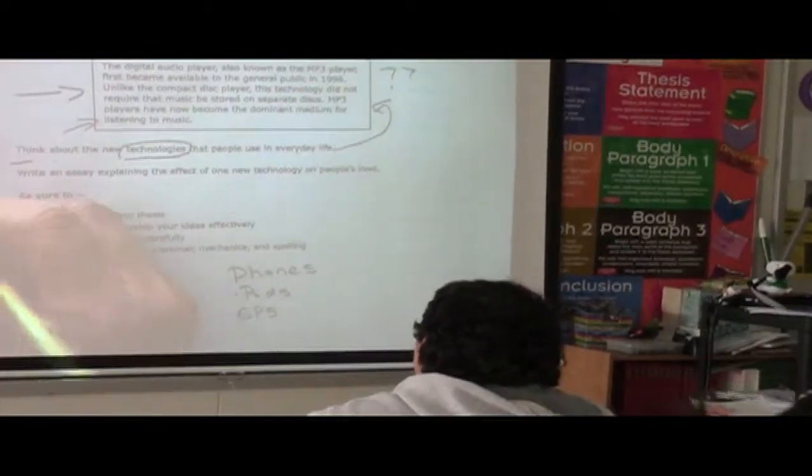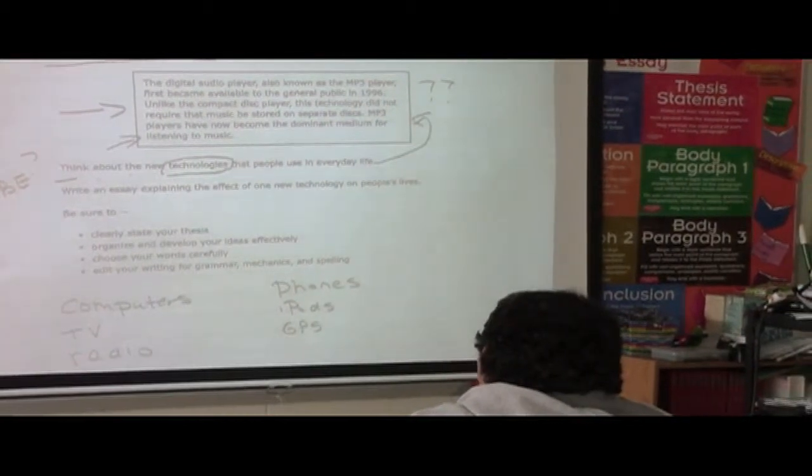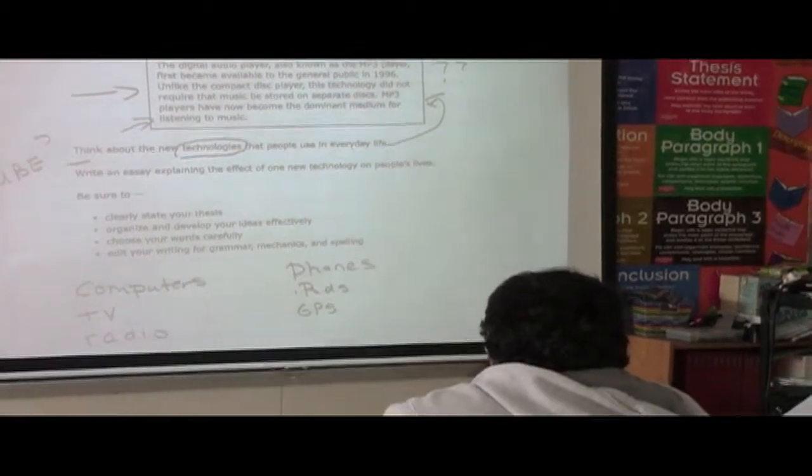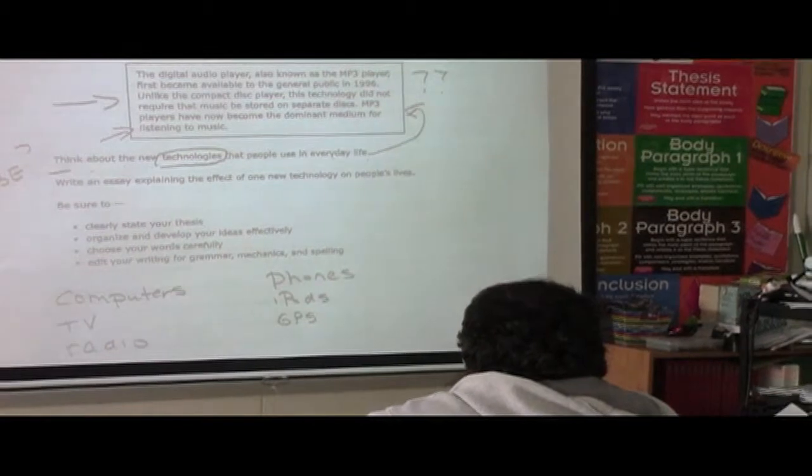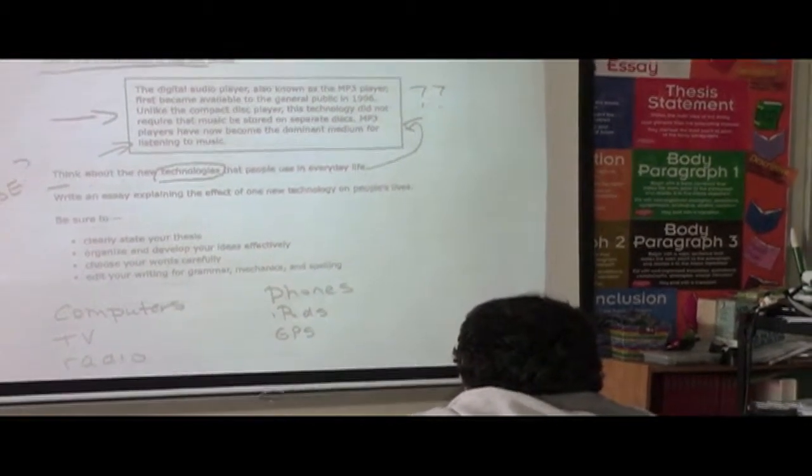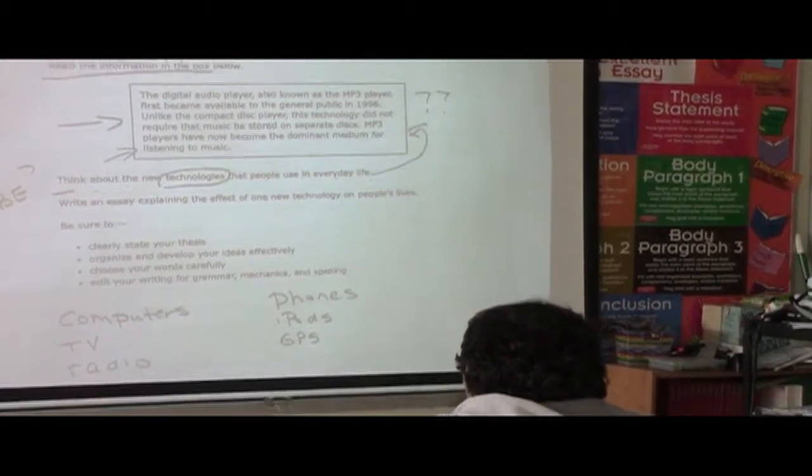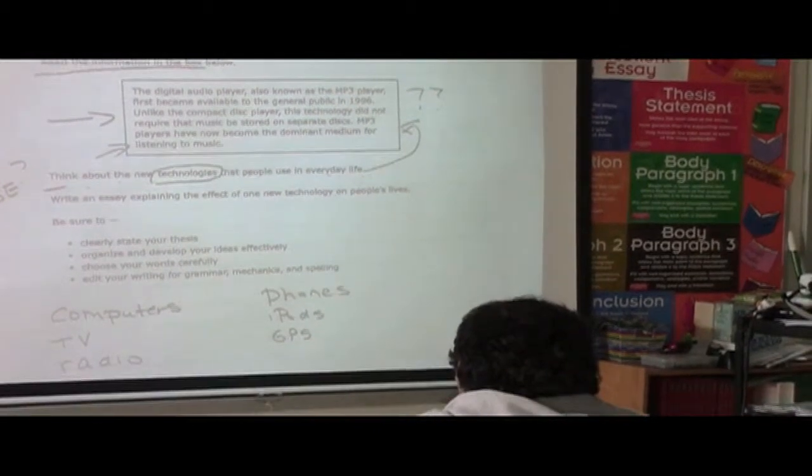So when we're in the think statement, and after we read that, we need to make sure we understand the effect of technology on people's lives. CUBE means we're going to circle any words we don't know the meaning of, because we need to look them up.